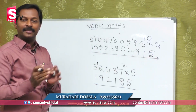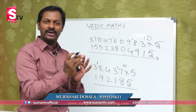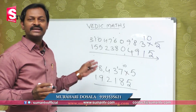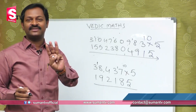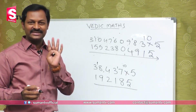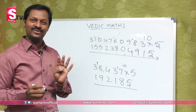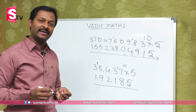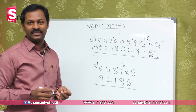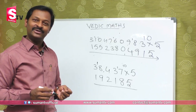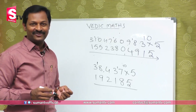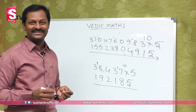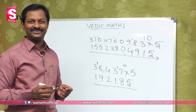Using the Vedic Maths method, any multiplication by 5 can be done in a maximum of 3 to 5 seconds. I hope you have gained confidence in doing mathematics. Thank you.